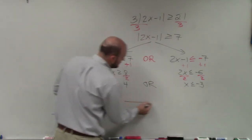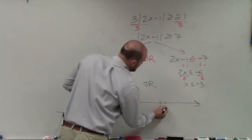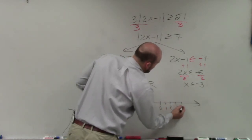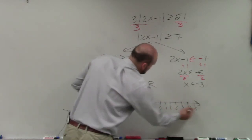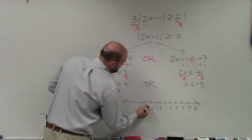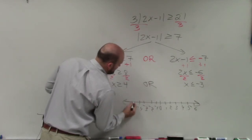So now, we go through our line. 0, 1, 2, 3, 4, 5, 6. Negative 1, negative 2, negative 3, negative 4, negative 5.